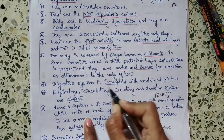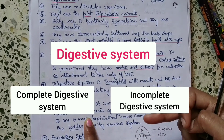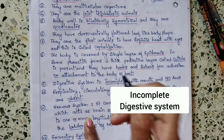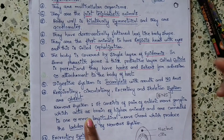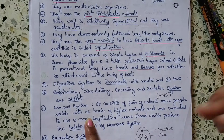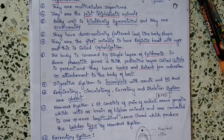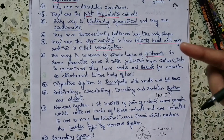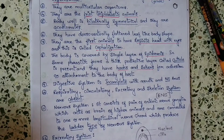Digestive system is incomplete — with mouth and no anus. There are two types: complete and incomplete digestive system. In Platyhelminthes, they show the incomplete digestive system, meaning they have only one pore which serves as the mouth; there is no anus. A complete digestive system means two pores — one for the mouth and another for the anus, where food is taken in through the mouth and waste exits through the anus.